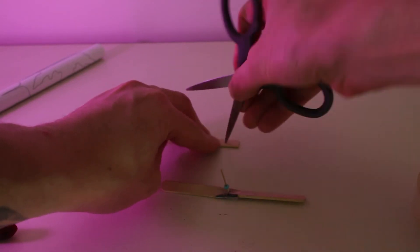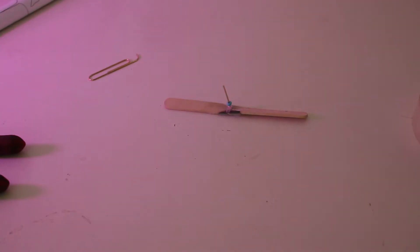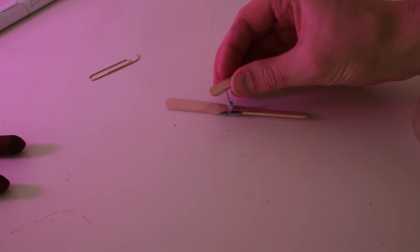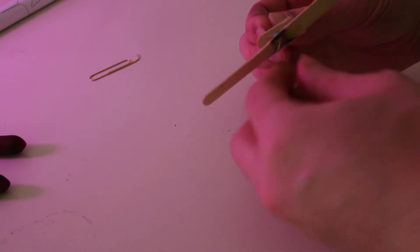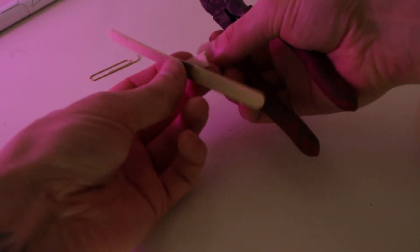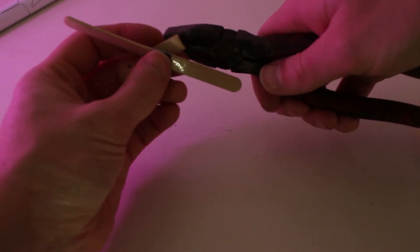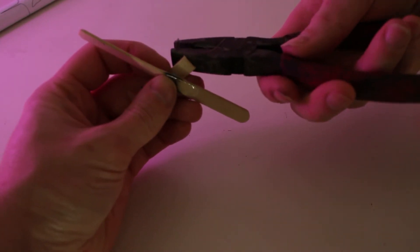Now use the scissors again and make another hole in this icy pole stick. We're going to put it through the paper clip. Now use the pliers to create a loop on the end of the paper clip.